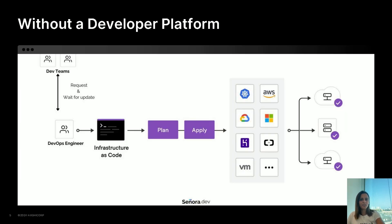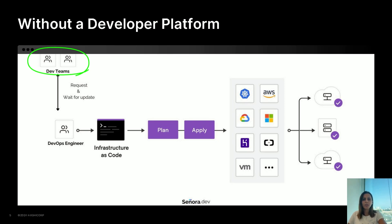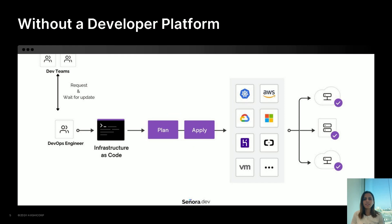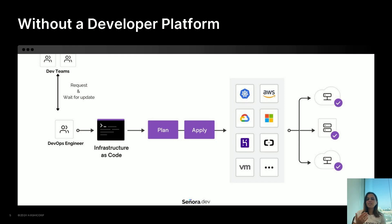In the diagram here, you can see the flow that most organizations follow. The development teams request a change in infrastructure or the creation of new infrastructure. The DevOps or SRE team edits the Terraform code, runs apply, and once everything works, updates the developers that the infrastructure is ready. And here is where the bottleneck occurs — there are many developers in the organization, all needing help, not necessarily related to infrastructure updates. The DevOps teams have diverse tasks, and their demand is high during development.